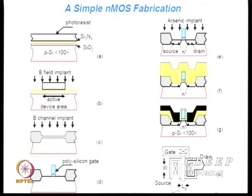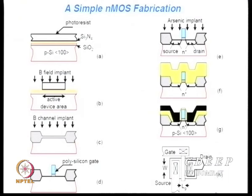A thick oxide is deposited, then windows are created for metal connections to source, drain, and gate. Contact metals are placed and patterned. The lower portion shown is the composite mask — this is the pattern seen on silicon. Source and drain windows, contact gate, and gate masks must all be aligned with earlier ones.